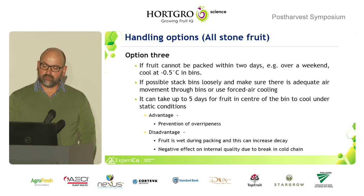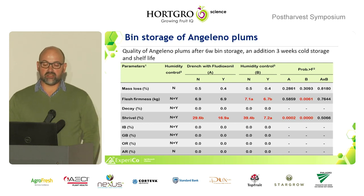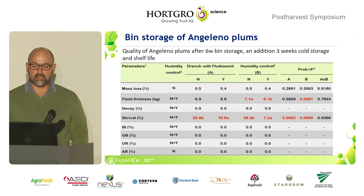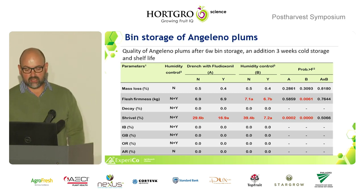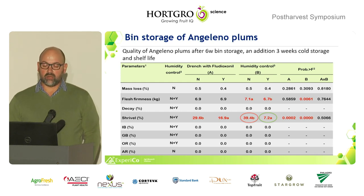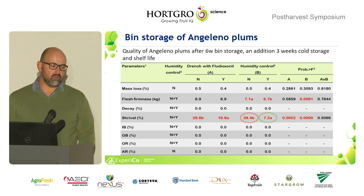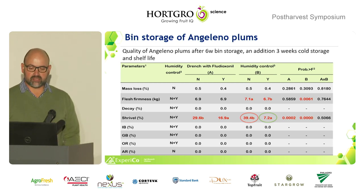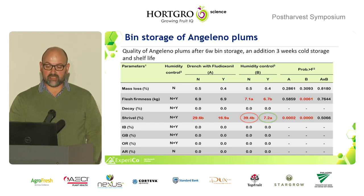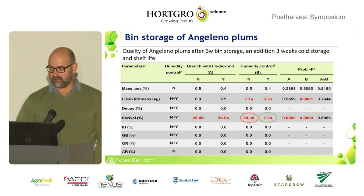We did work on Angelino plums stored for six weeks in bins, then packed into cartons with a 54×2mm grey bag and simulated for three weeks of shelf life. We tested two cold rooms: one bin room kept closed for the entire six weeks with wet floors, and one low-humidity room with a similar amount of fruit. You can clearly see the difference in shrivel resulting from that humidity control, showing how important it is to manage relative humidity.